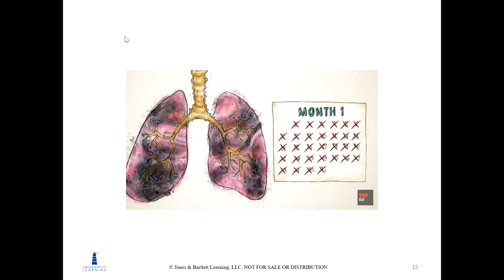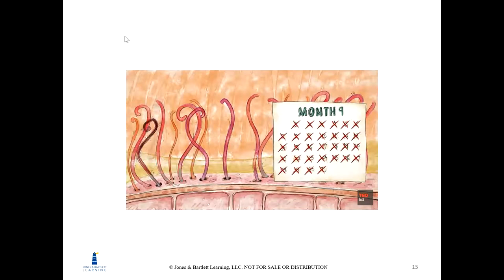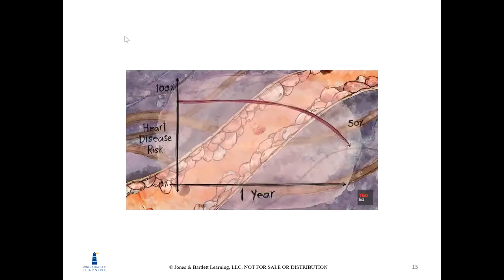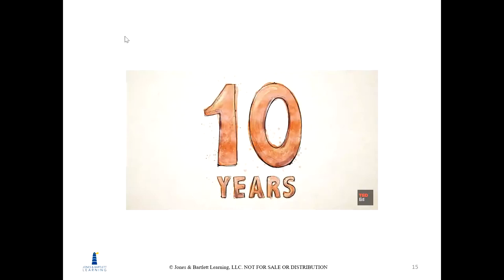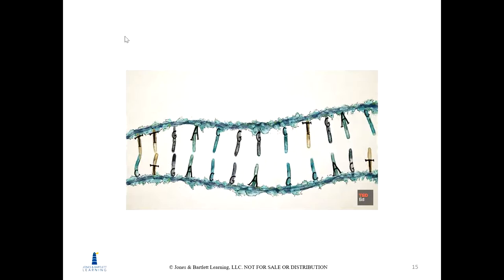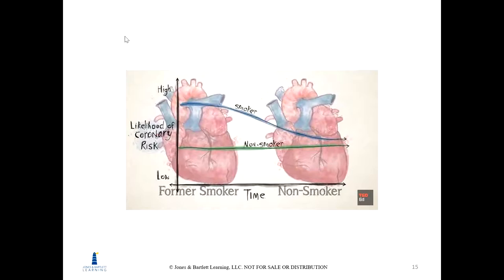Lungs become healthier after about one month, with less coughing and shortness of breath. The delicate, hair-like cilia in the airways start recovering within weeks and are restored after nine months, improving resistance to infection. By the one-year anniversary of quitting, heart disease risk plummets to half as blood vessel function improves. Five years in, the chance of a clot forming dramatically declines and the risk of stroke continues to reduce. After 10 years, the chances of developing fatal lung cancer go down by 50%, and after 15 years, the likelihood of developing coronary heart disease is essentially the same as that of a non-smoker.